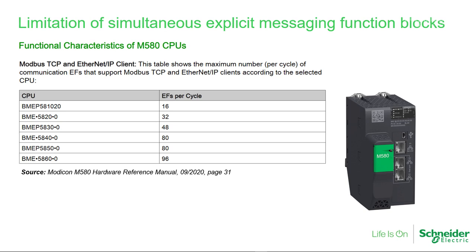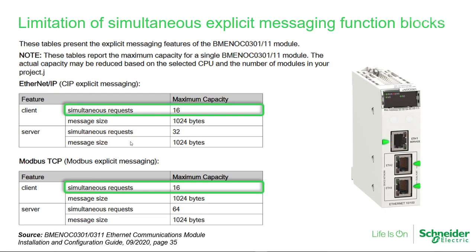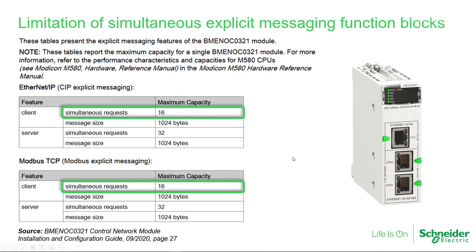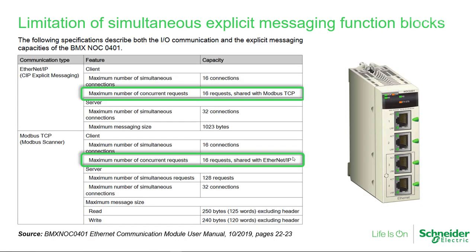The maximum number of simultaneous explicit messaging function blocks is documented in the user guides for each processor and Ethernet communication module. For M580 CPUs, it varies from 16 to 96 depending on the CPU model. For the BME NOC 301 or 311, and also the BME NOC 321 module, the maximum is 16. The BMX NOC 0401 module for the M340 PLC also has a maximum of 16 simultaneous requests shared between Modbus TCP and Ethernet IP.